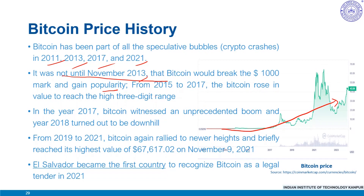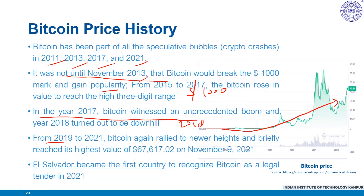Bitcoin stayed in the higher three-digit range during the first half of 2014 but began sliding to a low of $172 around January 2015. From 2015 to 2017, Bitcoin rose to reach $1,008 around February 2017. In 2017, Bitcoin witnessed an unprecedented boom, crossing $10,000 and briefly reaching $17,250 in December 2017. The year 2018 saw a freefall, stabilizing around $3,000 by year end. From 2019 to 2021, Bitcoin rallied to a highest value of around $67,617 in November 2021, after which it again dipped. El Salvador became the first country to recognize Bitcoin as legal tender in 2021.